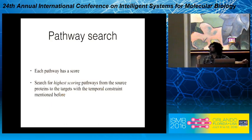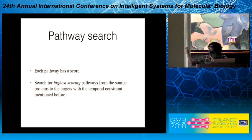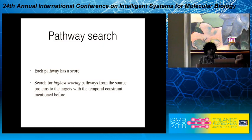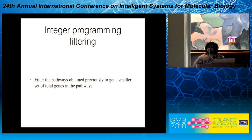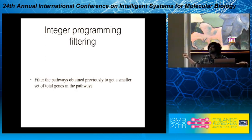To extract the candidate pathways, each pathway has a score indicating our confidence in whether that pathway is real. We search for the highest scoring pathways from the source proteins to the target proteins with the temporal constraint I mentioned. Once we do that, we want the most succinct explanation of the differential expression of these targets — the minimal set of genes that can still explain as many differentially expressed targets as possible. We use integer programming to filter the candidate pathways to a smaller set.